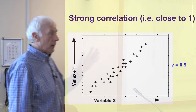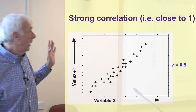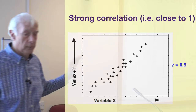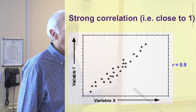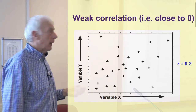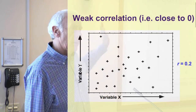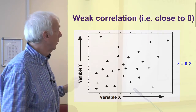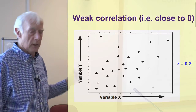A stronger correlation is positive again — as one increases so does the other, but the points are closer to a straight line. In this case the correlation figure comes out as 0.9, pretty close to 1. On the other hand, a weak correlation shows just a slight tendency for one thing to increase with the other, but the points are scattered so much that there isn't a strong correlation at all — and the value you get is 0.2.